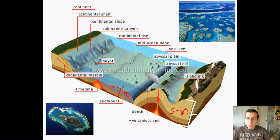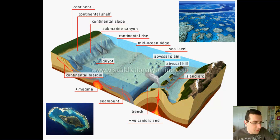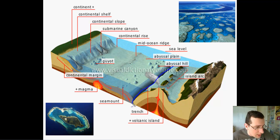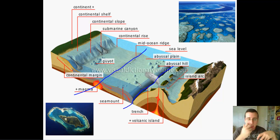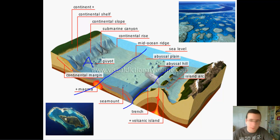Remember that the continental crust and the oceanic crust are different. You see different plates on screen. There's a split here marked by the trench, and another split here marked by the mid-ocean ridge, giving you three plates or tectonic plates — three pieces of the Earth's crust. Piece A, the leftmost piece, has both continental crust and oceanic crust on it.